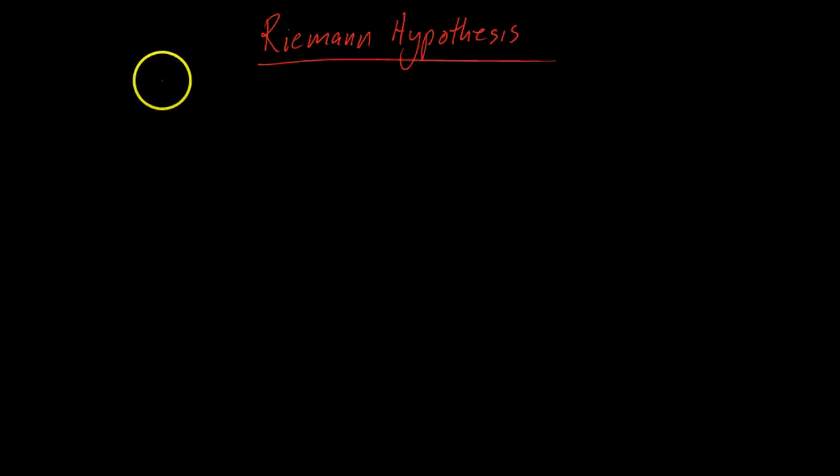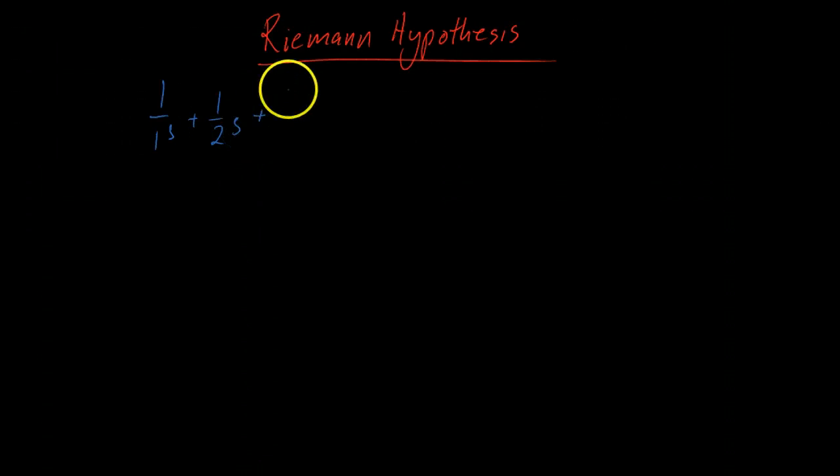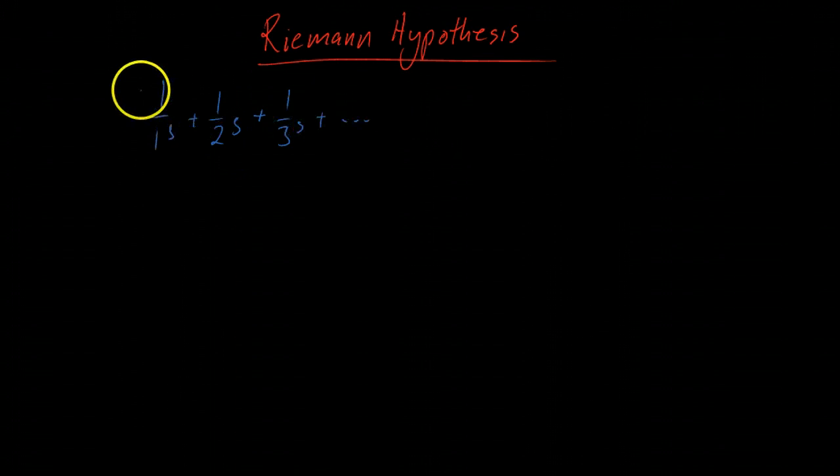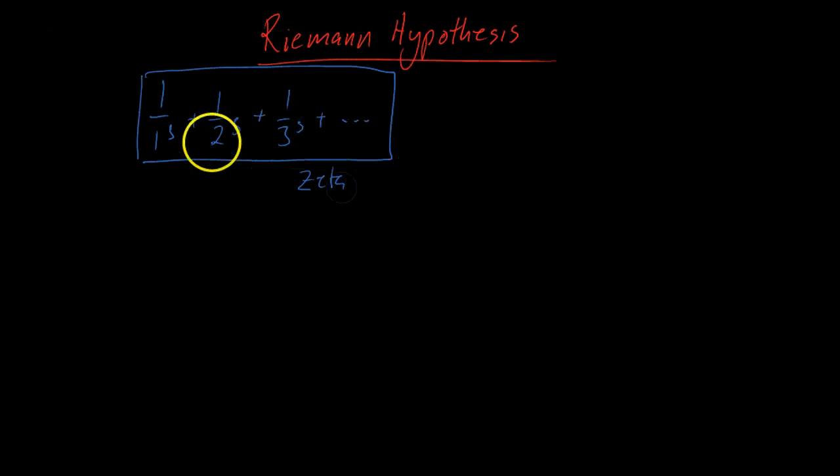I'm going to try to explain the Riemann hypothesis. The Riemann hypothesis simply starts by asking: what if you add 1 over 1 to the power of s, plus 1 over 2 to the power of s, plus 1 over 3 to the power of s — you can see the pattern, just go on like that. You call this whole thing the zeta function.